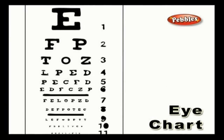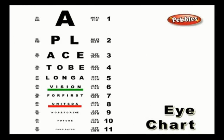Eye Chart. An eye chart is a chart used to measure vision clarity. It generally consists of alphabets of different sizes, and the patient is asked to read them in order to check their vision.